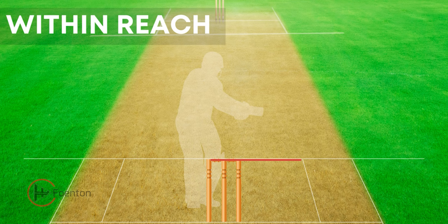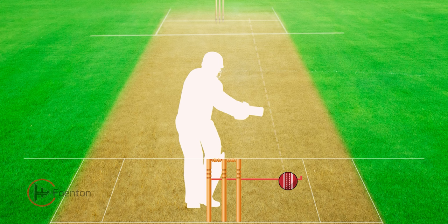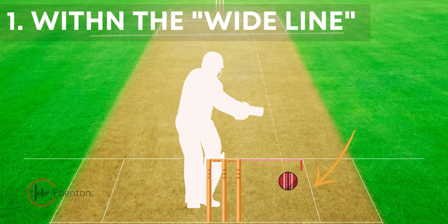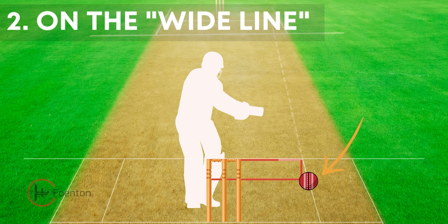An umpire also looks at whether the ball is within the reach of the batsman in deciding if it is a wide ball. For this, umpires use the lines as guides in making their decision. A ball should not be considered a wide ball if it is bowled within the wide line, or even if bowled on the wide ball line, considering that the batsman has maintained the normal guard.